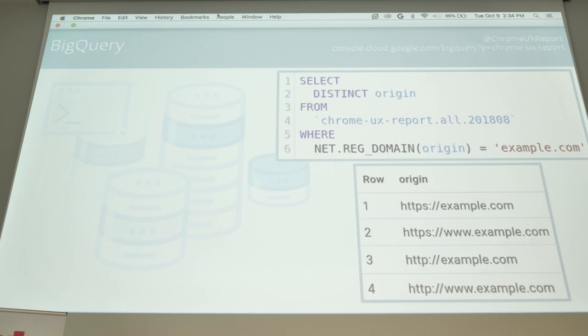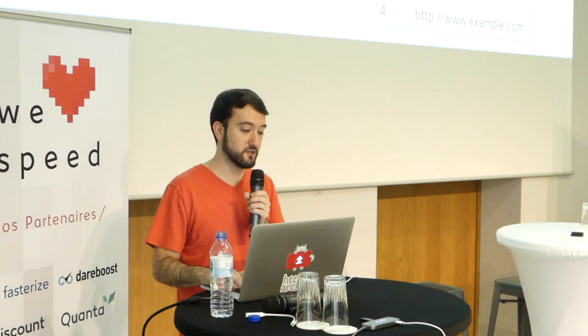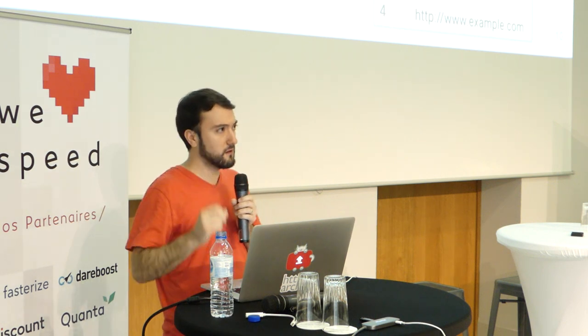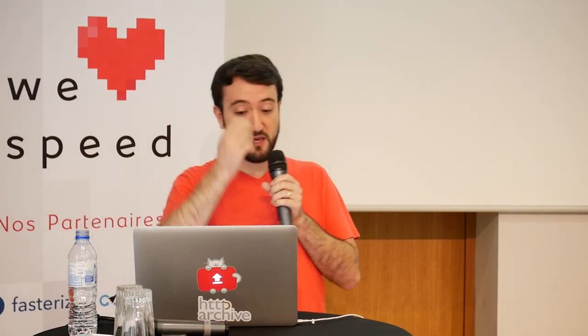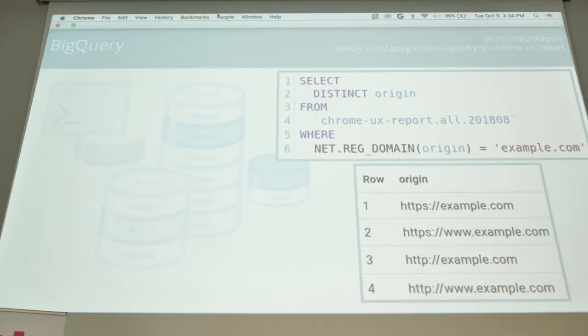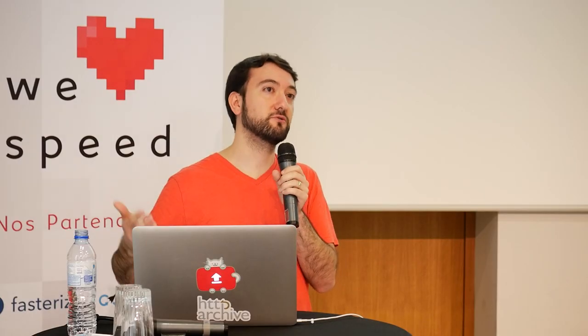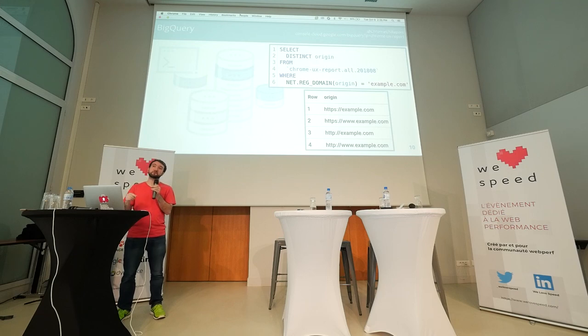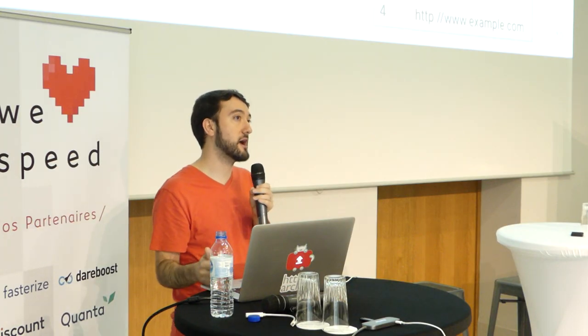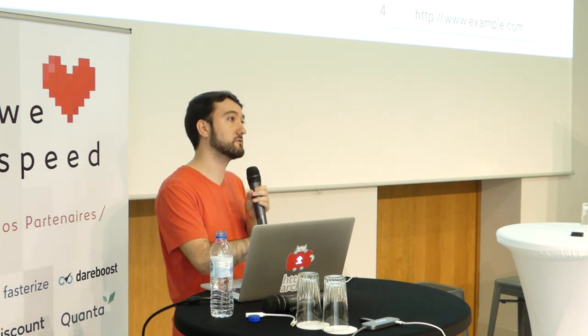On line 4, we're querying the Chrome UX report BigQuery project, the 'all' dataset — meaning that it covers all countries — and 2018-08, the August 2018 table. The query overall is saying: give me all of the unique origins whose domain is example.com. We can see that there are four origins for example.com: some with HTTPS, HTTP, www subdomain, and no subdomain at all. So it looks like there's one website, but it's actually used four different ways by users. It's very important, if you're going to query this dataset, to use the correct origin — the canonical origin — focusing on that canonical final URL.